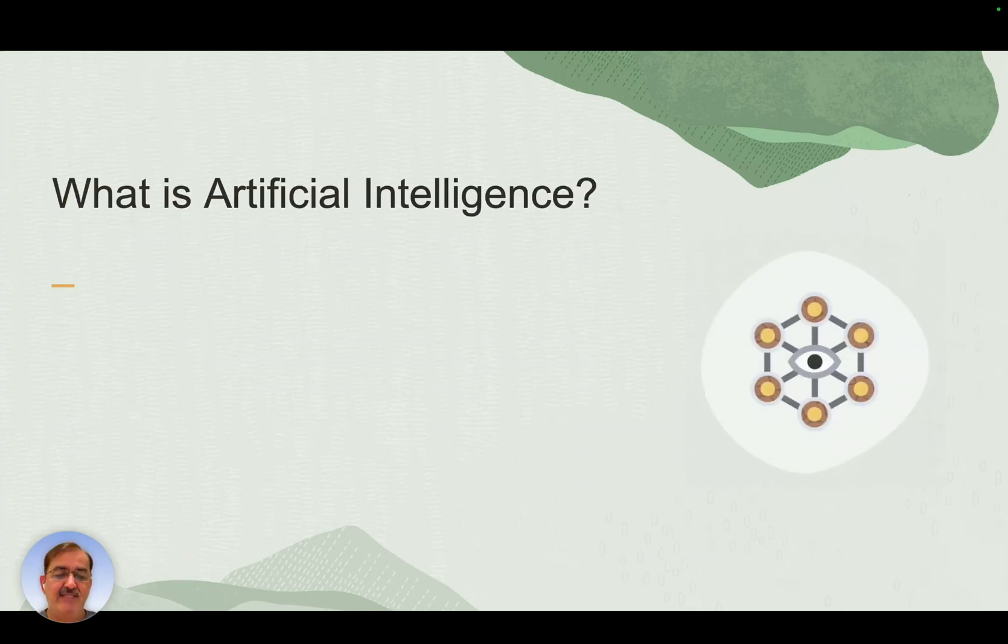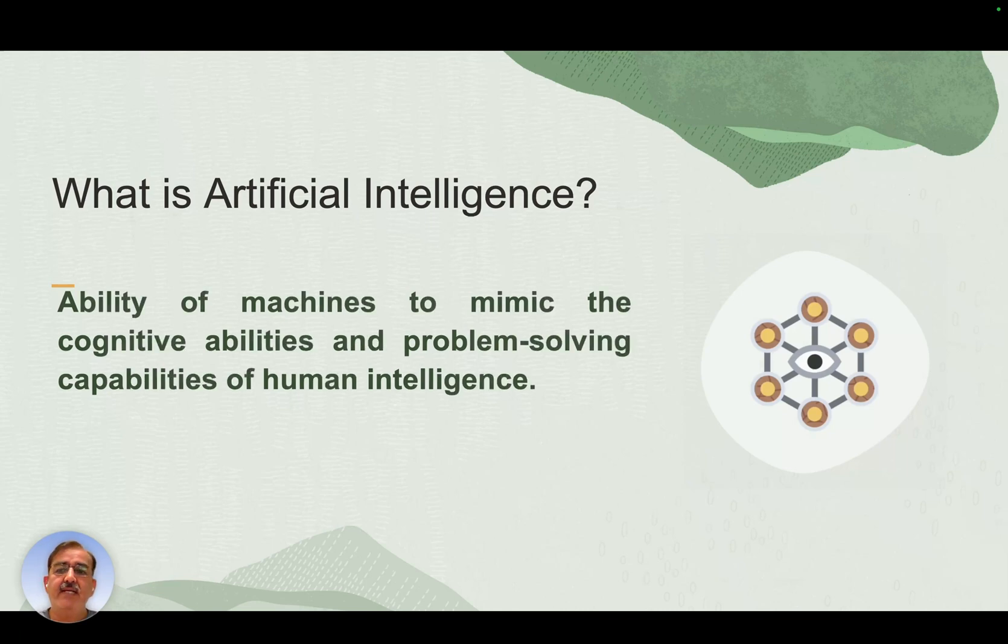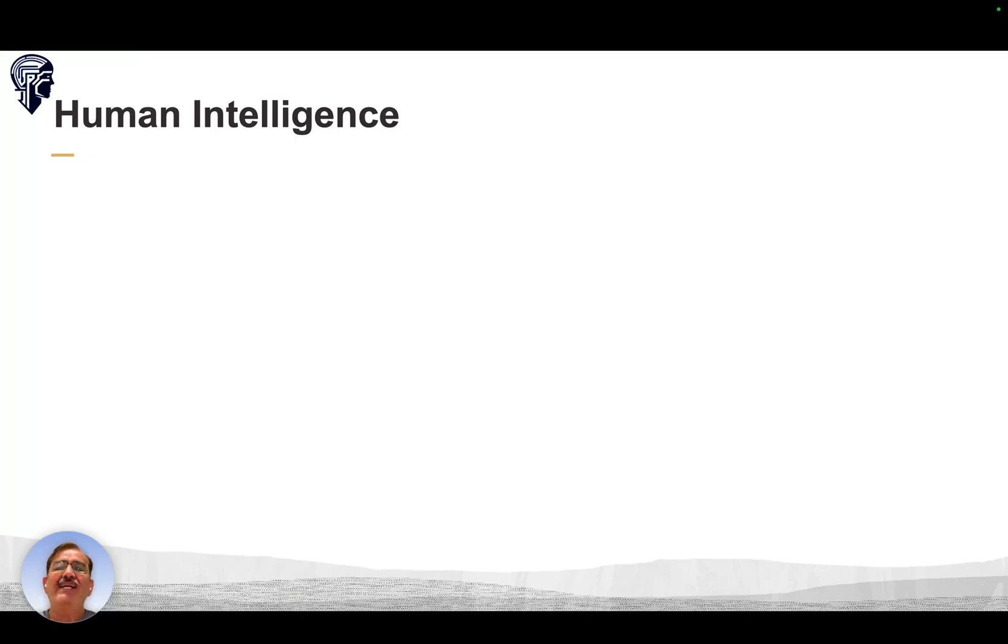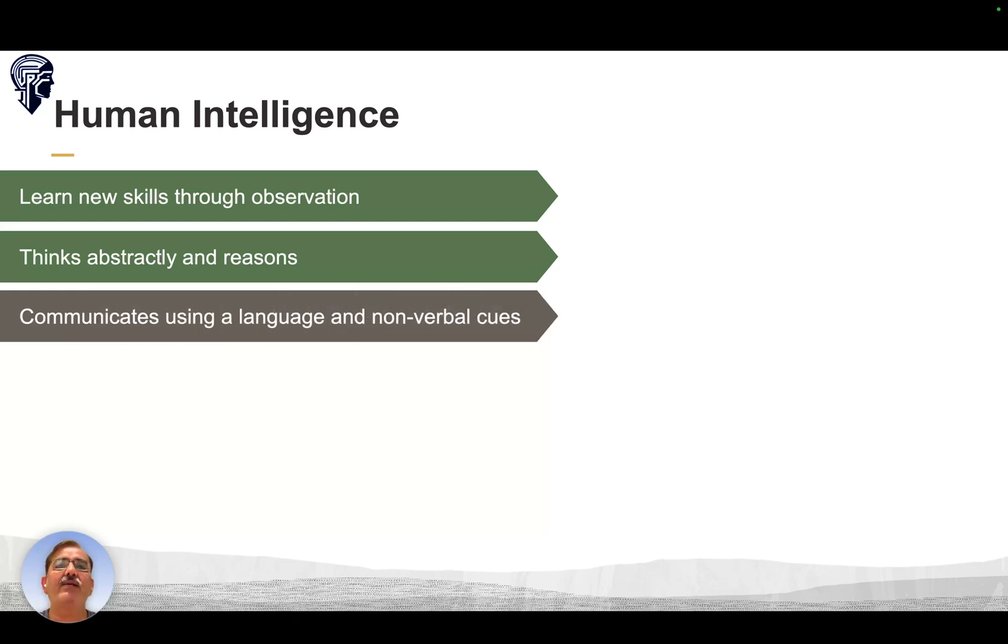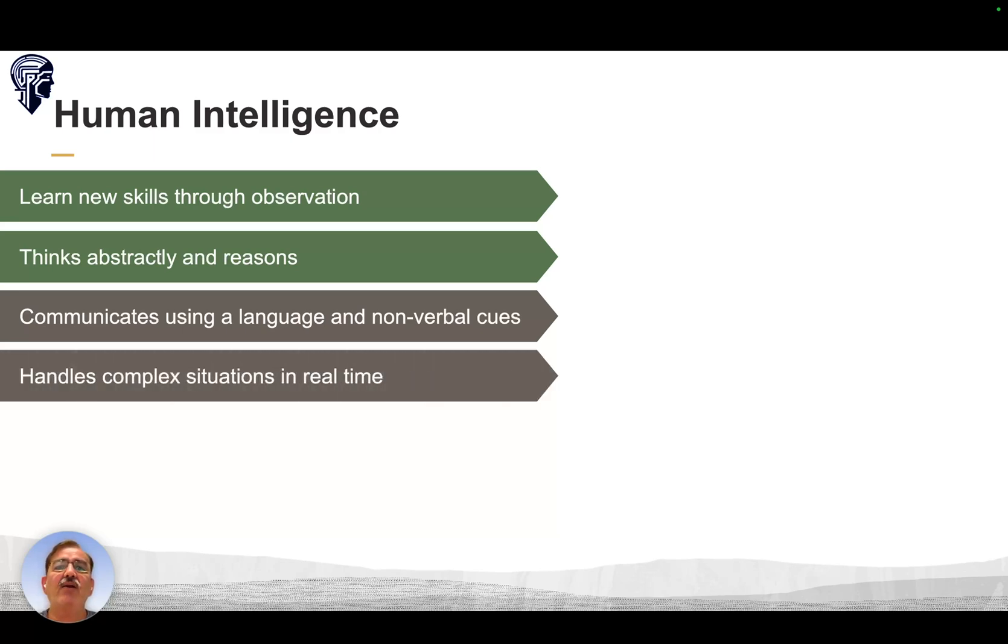What is artificial intelligence? It's the ability of machines to mimic the cognitive behavior, abilities, and problem-solving capabilities of human intelligence. What is human intelligence? As humans, we have the ability to learn new skills through observation, think abstractly and reason, communicate using language and non-verbal cues, handle complex situations in real time, and plan short-term and long-term.